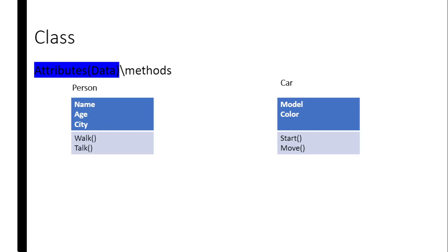A person can perform the following functions: a person can walk, a person can talk. Another example is a class of a car. A car can have data or attributes such as a model or color, and you can perform functions on a car like start or move.